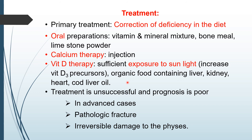Supportive treatment is also required along with the primary treatment, which leads to early recovery. However, in a few cases the treatment is unsuccessful and prognosis is poor, especially in very advanced cases. When cases reach a stage where there is pathologic fracture or irreversible damage to the physis, these cases are very difficult to treat, the treatment is unsuccessful, and the prognosis is poor. Otherwise, treatment of rickets is highly successful.